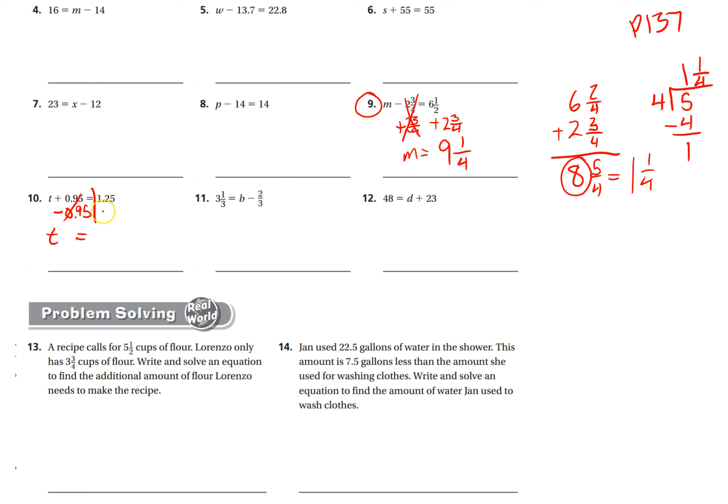So I have to subtract 0.95 from the right side as well. Okay, so let's do that work over here. This is like my scratch paper. 1.25 minus 0.95. Five minus five is zero. Here I have to borrow, bring my decimal straight down. So t equals 0.30.